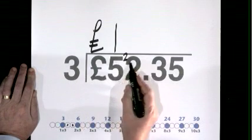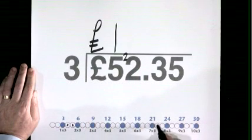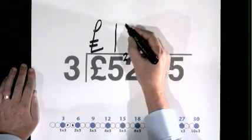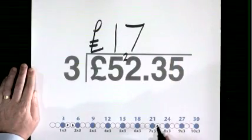3 goes into 22, 22 lives here 1, 2, 3, 4, 5, 6, 7 times. Remainder 1.